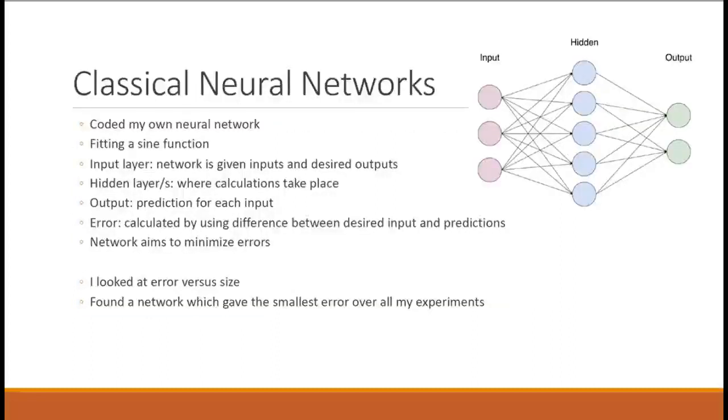The image in the top right is a classical neural network with the circles being neurons and the lines connecting them weights. It can be seen that the network consists of an input layer, a hidden layer and an output layer. The given inputs and desired outputs are put into the input layer. In this case, the given inputs are 50 random numbers between minus 1 and 1 and the desired outputs were the sine of these values.